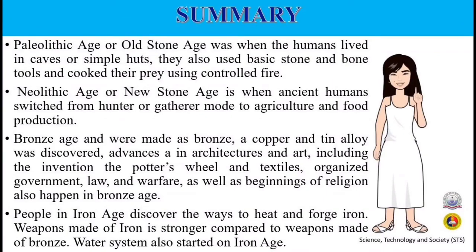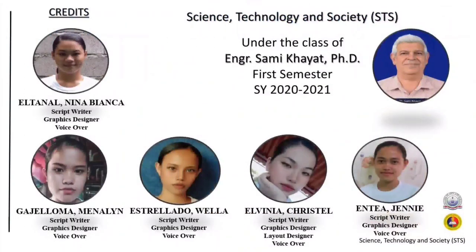Next is the Iron Age. People in the Iron Age discovered ways to heat and forge iron. Weapons made of iron are stronger compared to those made of bronze. Water systems also started in the Iron Age. Architecture, art, and religion all became more sophisticated. Writing systems and written documentation, including alphabets, began to emerge, ushering in the early historical period. That ends our presentation — hope you learned something. God bless and have a nice day, everyone.